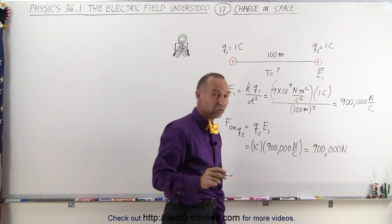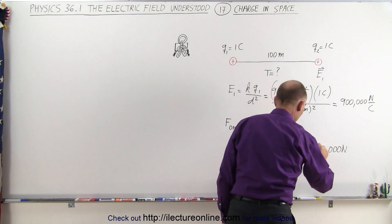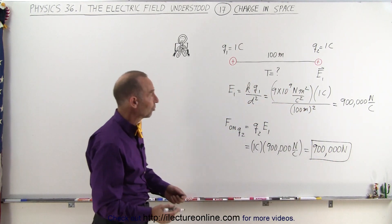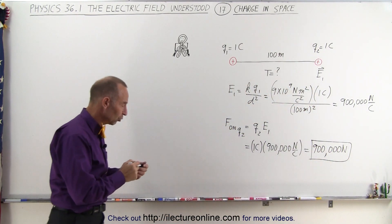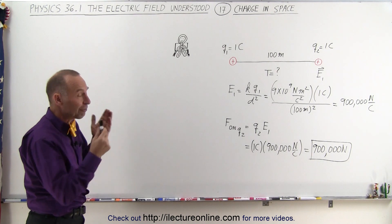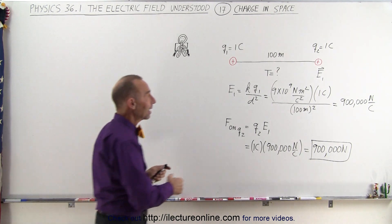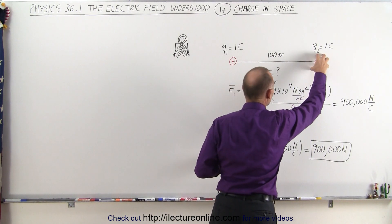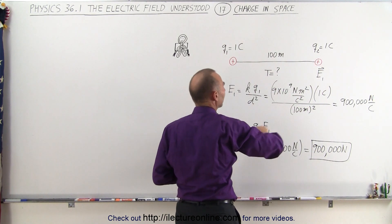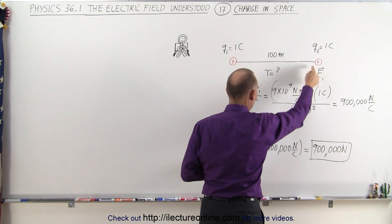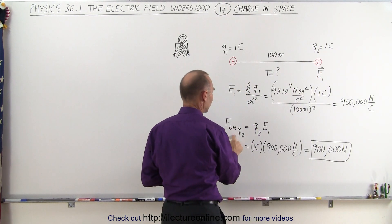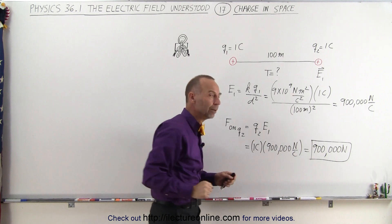So you better make that a very strong string or rope, because it would not be able to withstand that enormous force between those two charges. That's how we found the tension on the string: by first calculating the electric field here caused by the charge over there, and then finding the force on that charge by placing it in the field. So the force on Q2 is simply Q2 times E1.